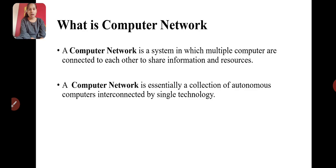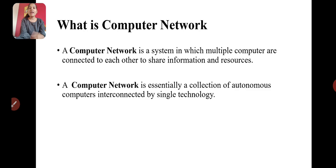Another definition: a computer network is essentially a collection of autonomous computers interconnected by a single technology. Interconnected means when two devices are capable of exchanging some information. So here, multiple computers are interconnected by using a single technology.